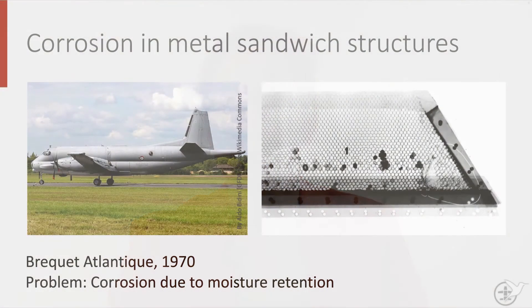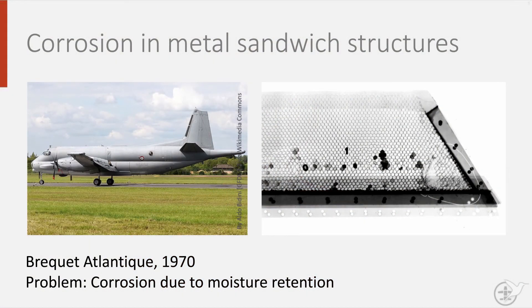To highlight the issue of corrosion, we take a look at a French maritime patrol aircraft, the Breguet Atlantique. It developed substantial corrosion issues due to water retention in its aluminum honeycomb, as can be seen in the x-ray photo taken in that period. The moisture remained trapped inside and increased the rate of corrosion.